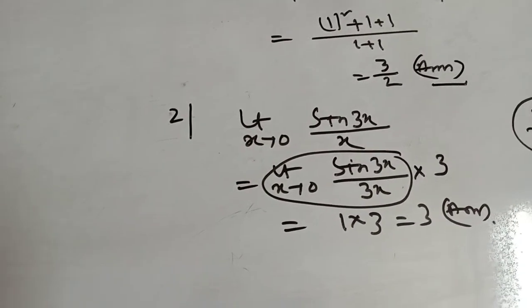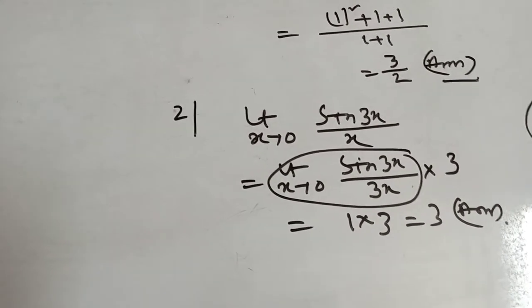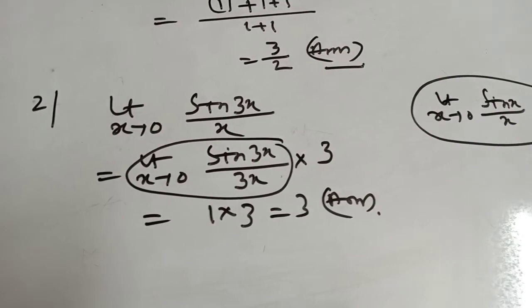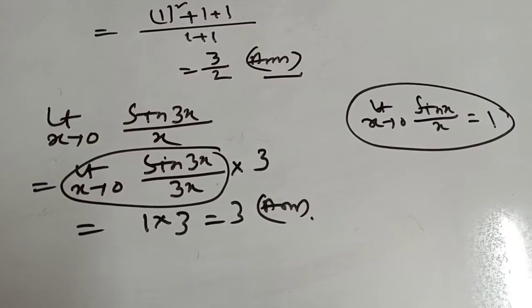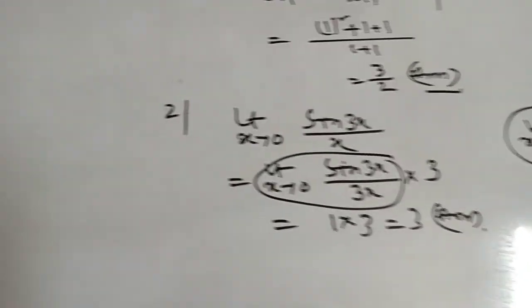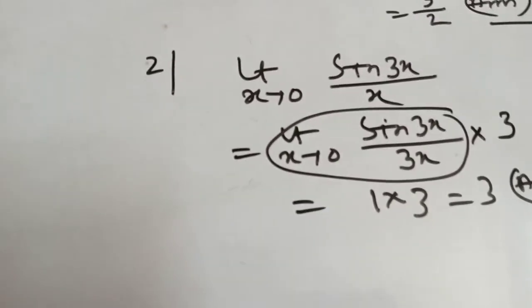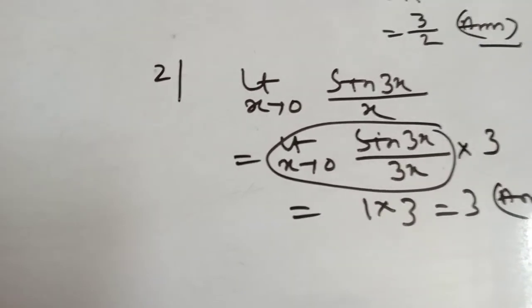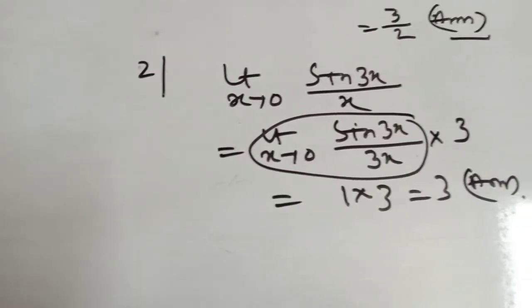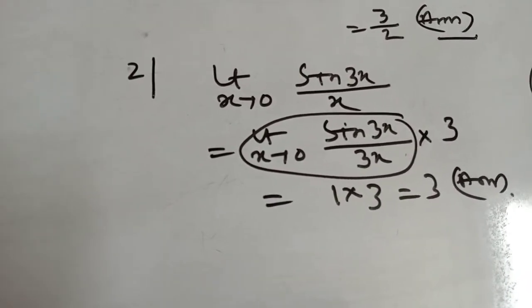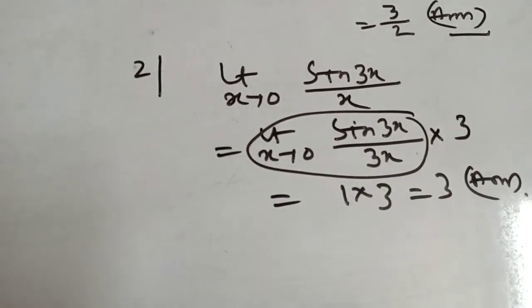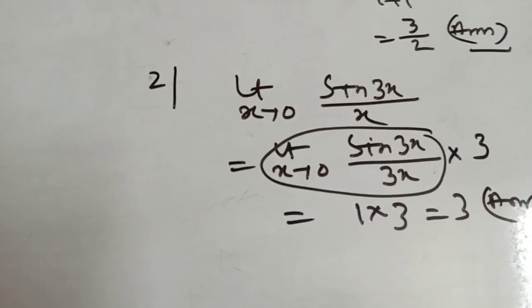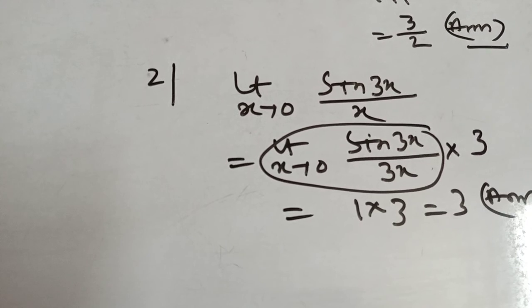Next part: limit x tends to 0 of sin 3x by x. You know that when limit x tends to 0, sin x by x equals 1. Applying this formula: sin 3x by x means you adjust it — write sin 3x over 3x in the lower position, then multiply by 3. The 3's cancel, so this part equals 1. Then 1 into 3 equals 3. That means the answer is 3.